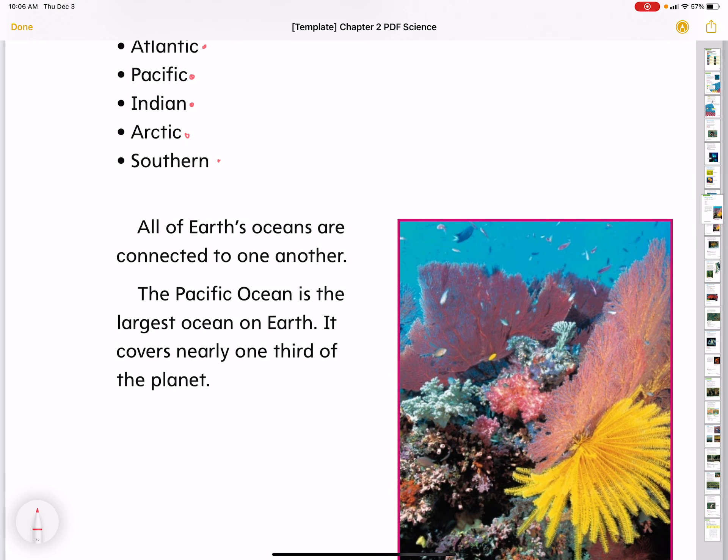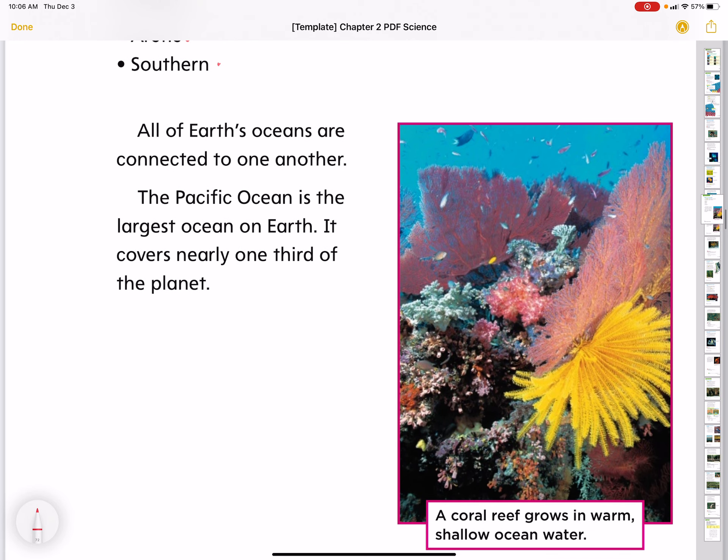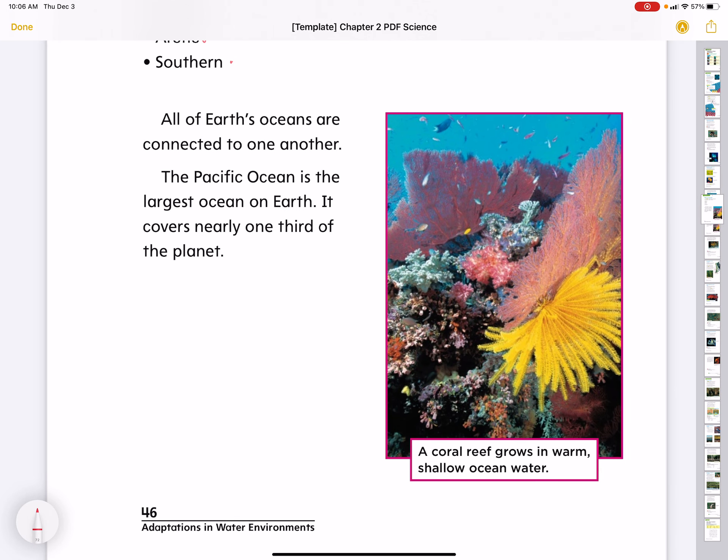All of Earth's oceans are connected to one another. The Pacific Ocean is the largest ocean on Earth. It covers nearly one-third of the planet.